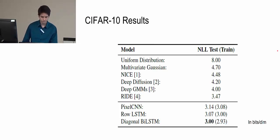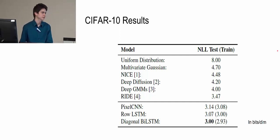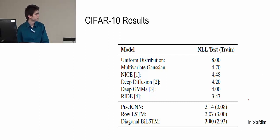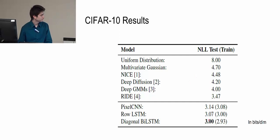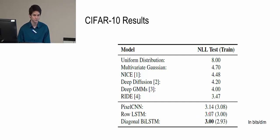Now we'll look at some results. We tested on CIFAR-10. The numbers are in bits per dimension, which is a measure of the negative log likelihood of generating the test set images — smaller numbers are better. The models generated in this paper are much better than previous methods. Diagonal biLSTM has the smallest value, which is best, because it has the largest receptive field and captures everything. Row LSTM is next because it has the next largest receptive field, followed by Pixel CNN, which is the simplest.